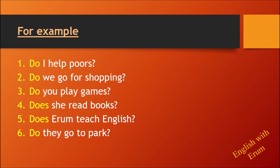Today we studied simple present tense — its definition and the three types of sentences: simple, negative, and interrogative — along with their three different rules. I hope you have understood this. If you have any problems or questions, you can tell us in the comment box. That's all for today. I will see you in the next video.